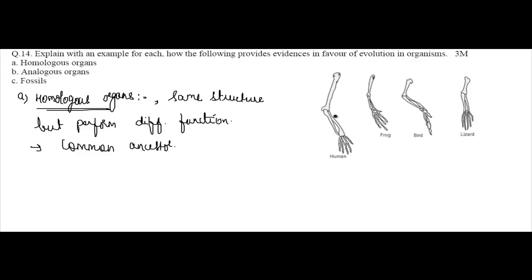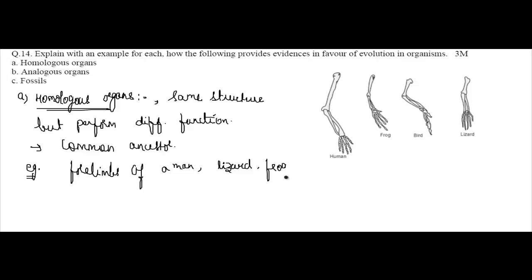Looking at this picture, these are examples of homologous organs — the four limbs of a man, lizard, frog, and bird. All of them have the same basic design of bones, but they perform different functions.